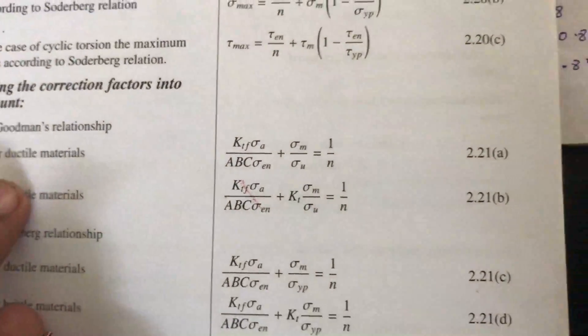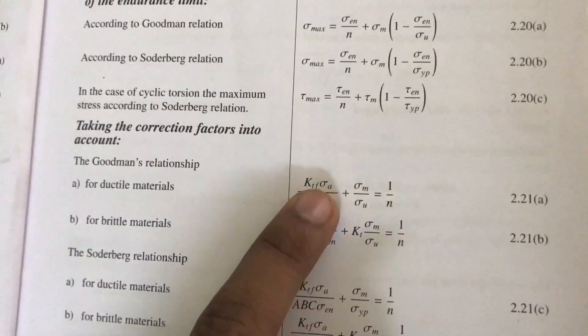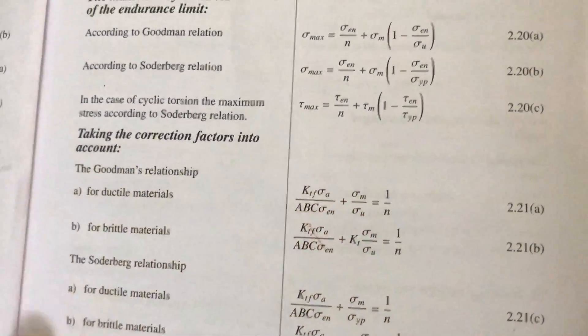N is the factor of safety, 1.5. Sigma EN and sigma M are in terms of D (diameter), so we can obtain the diameter.